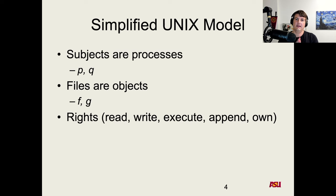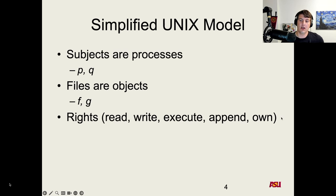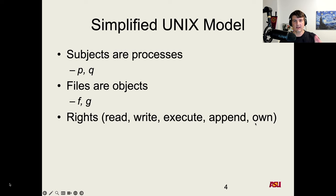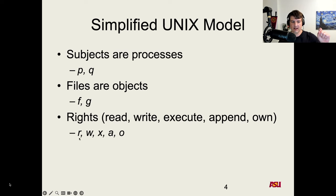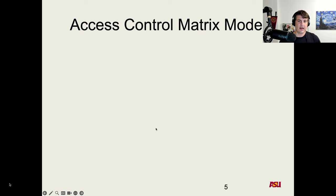This is why having append as a distinct right from write helps reduce risk — you can give a process only the rights it actually needs. Finally, the own (ownership) right means that if you own a file or object, you can grant rights on that object to other processes. This is how you can modify and change the matrix model itself.